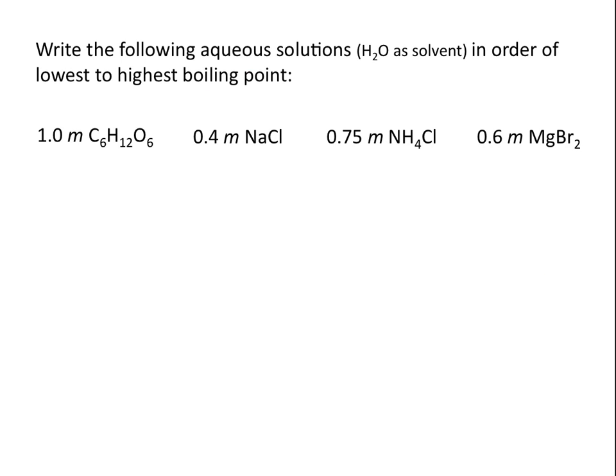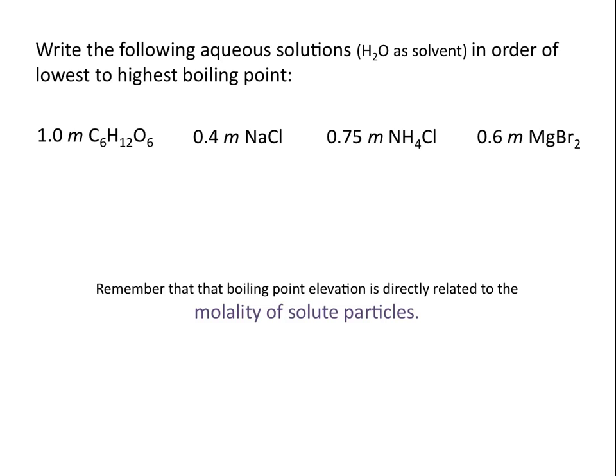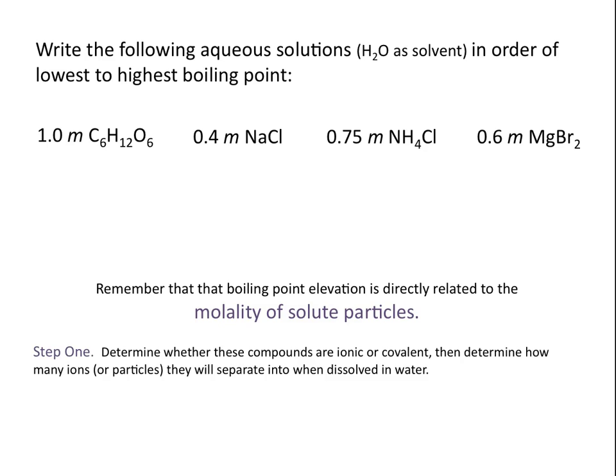Write the following aqueous solutions — aqueous meaning that H₂O is the solvent — in order of lowest to highest boiling point: 1 molal C₆H₁₂O₆ (glucose), 0.4 molal NaCl, 0.75 molal NH₄Cl, and 0.6 molal MgBr₂. Since boiling point elevation is directly related to the molality of solute particles, the first step is to determine whether these compounds are ionic or covalent and how many ions or particles they separate into when dissolved in water.